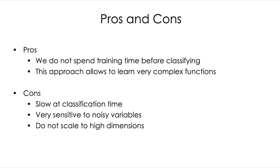The main cons are that the model is slow at classification time because it must calculate the distance of the new point to all existing training points to find the k nearest neighbors. It is also very sensitive to noisy variables, since noisy variables affect the similarity metric and lead to bad results. Additionally, it won't scale to high dimensions because of the curse of dimensionality — we will talk about that a bit later.